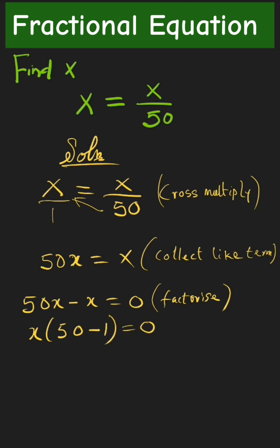Next step: we have x into 49, which is 50 minus 1, which gives us 49. Now we can express this as 49x equals 0. What are we going to do? We divide both sides by the coefficient of x, which is 49.